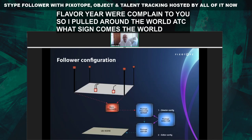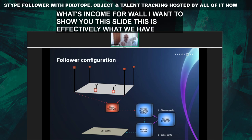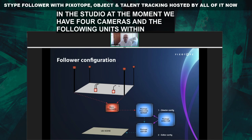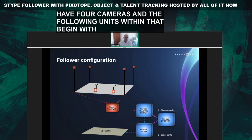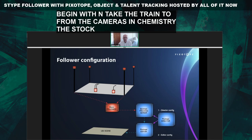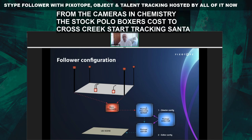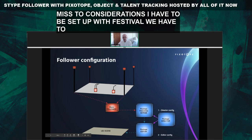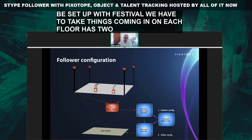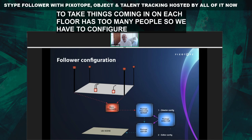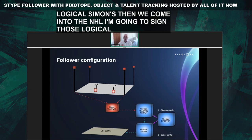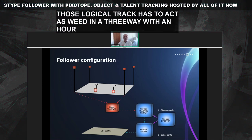So I want to show you this slide. This is effectively what we have in the studio at the moment. We have four cameras and the follower units are within that volumetric space. We then take the data from the cameras — it comes through the Snipe Follower box and is passed across to the Pixotope tracking server. Then once we're in the server, there are two configurations that have to be set up.